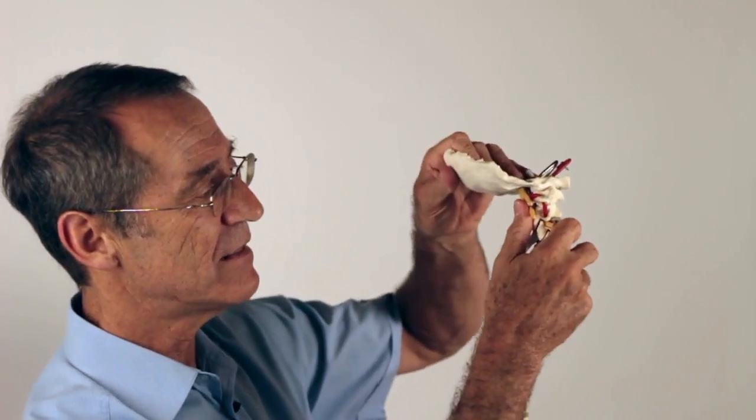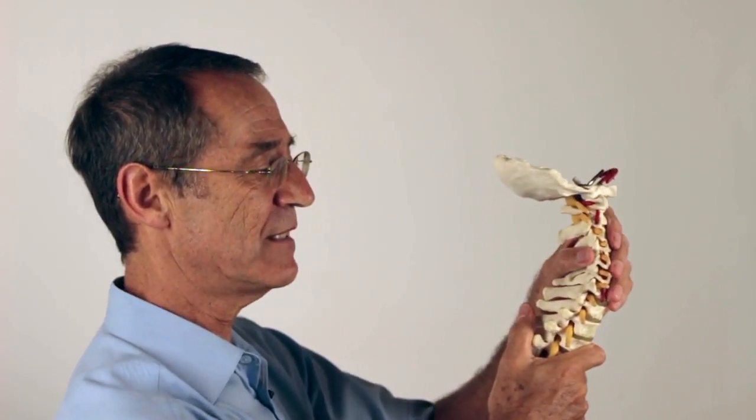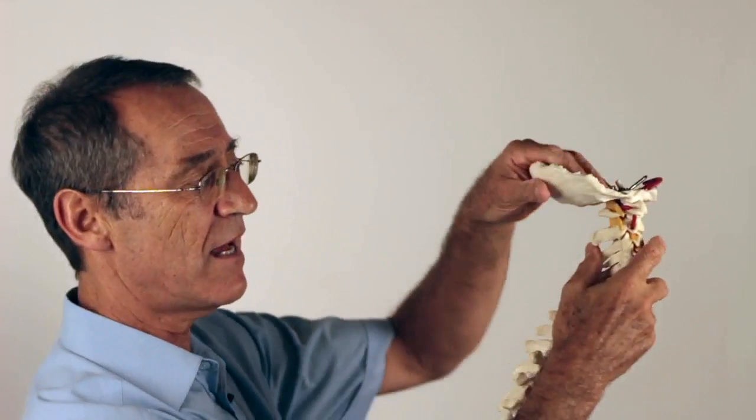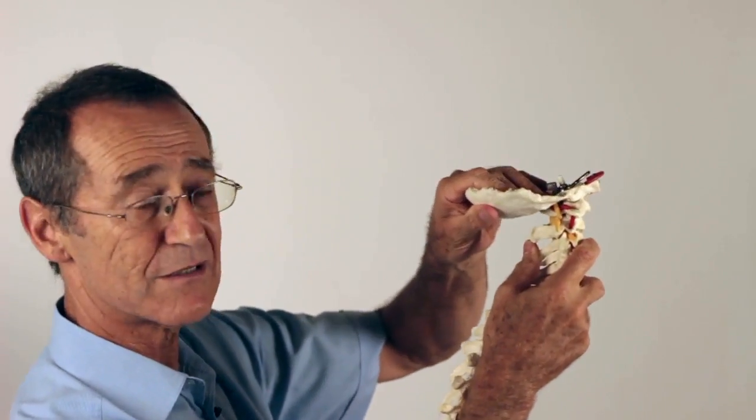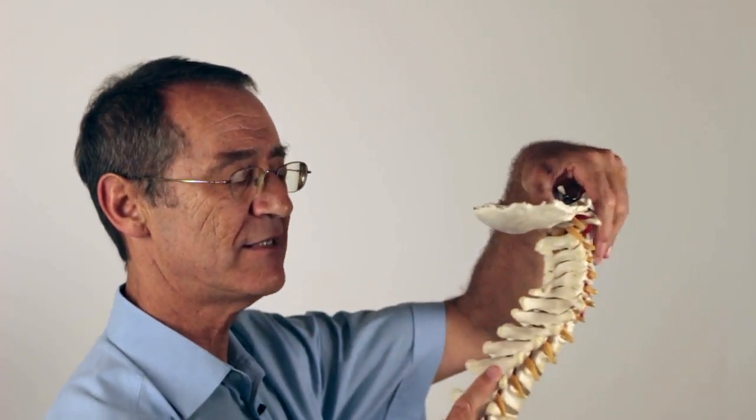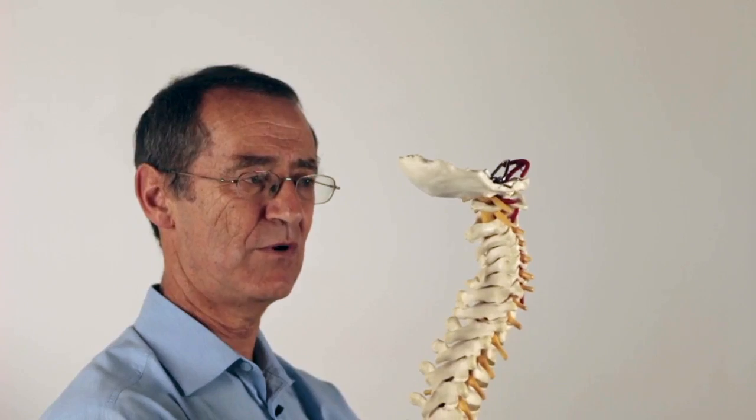And what he was doing was, he was slumping down here, pushing his head forward, and nutating, sliding this joint forward. In so doing, he was creating a new point of balance. So, as he stood up straight, here is where his head was.